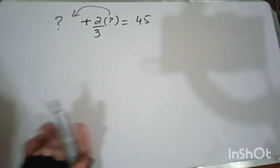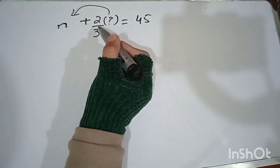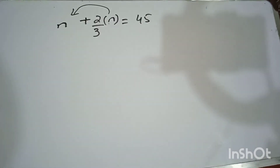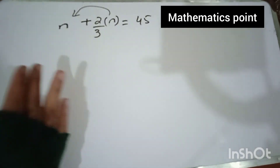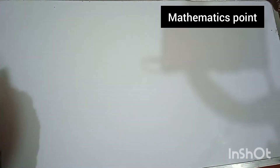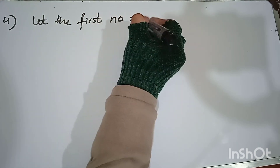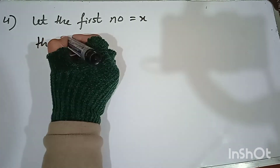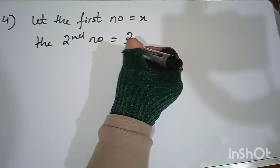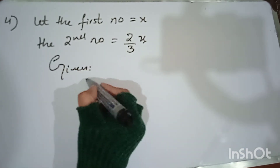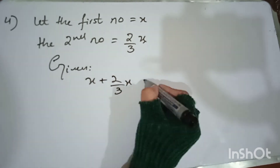Let the first number equal x. Then the second number is (2/3)x. The equation becomes: x + (2/3)x = 45.